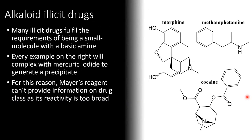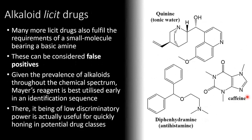So what kinds of illicit drugs are there that are alkaloid in nature? It turns out that many illicit drugs fulfill the requirement of being a small molecule with a basic amine. All of the examples shown on the right — morphine, methamphetamine, and cocaine — will all complex to mercuric iodide to generate a precipitate. For this reason, Mayer's Reagent can't provide you with information on a drug's class; its reactivity is simply too broad. Similarly, there are many legal drugs that also fulfill the requirements of being a small molecule containing a basic amine functionality, and these can be considered false positives.